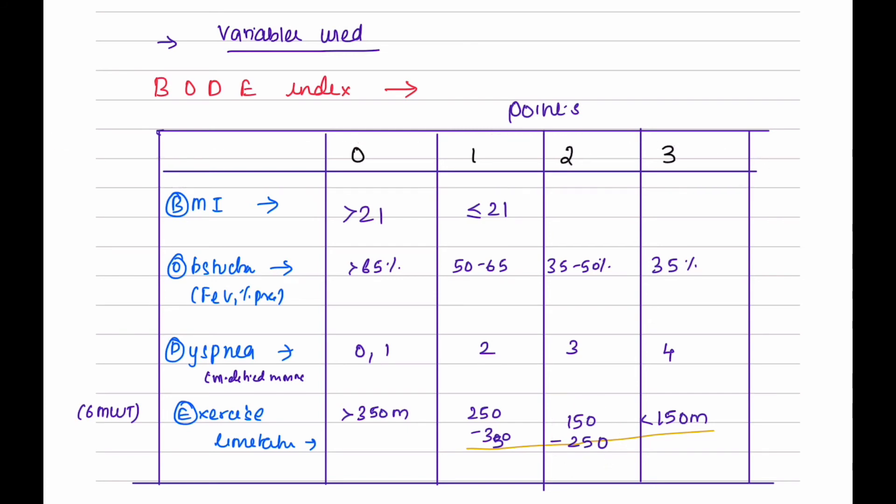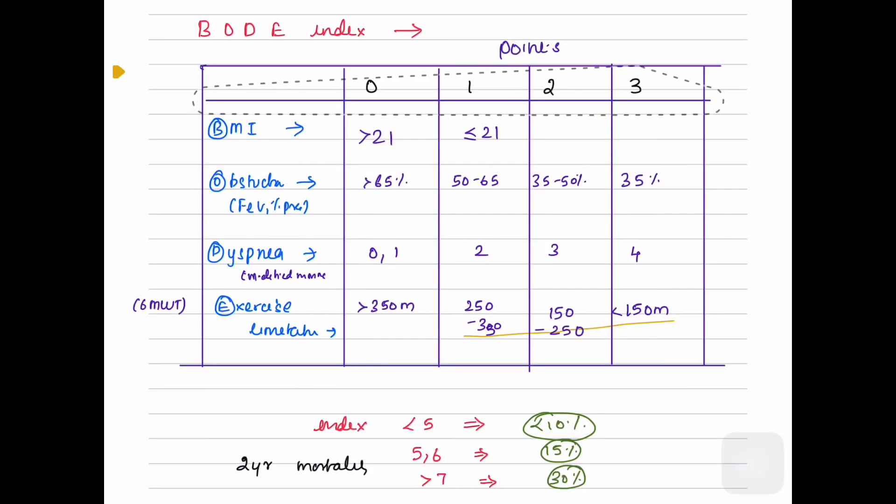So if the total index is less than 5, the two-year mortality would be less than 10%. If the index is 5 or 6, the two-year mortality would be 15%. If the index is greater than 7, the two-year mortality would be 30%.